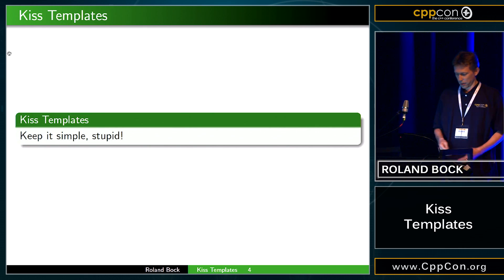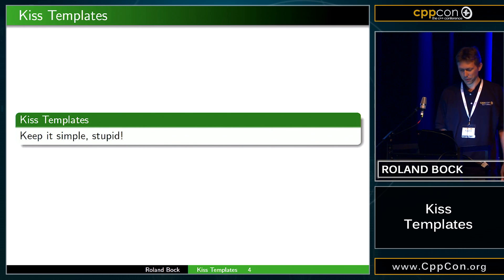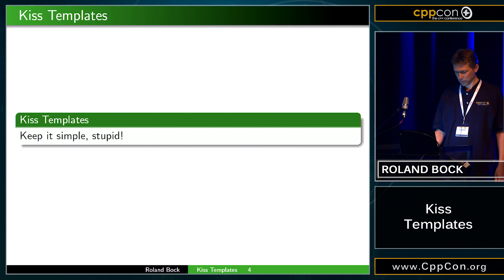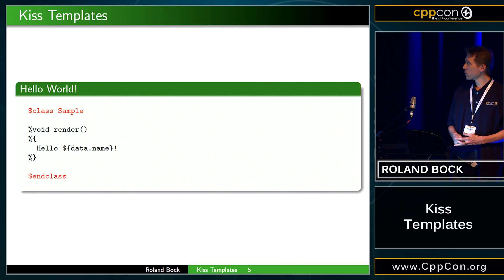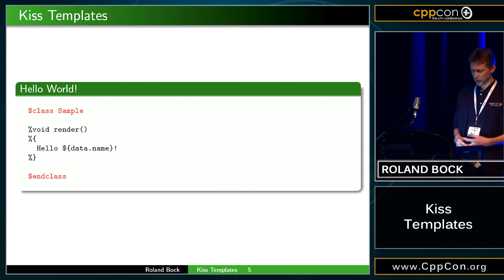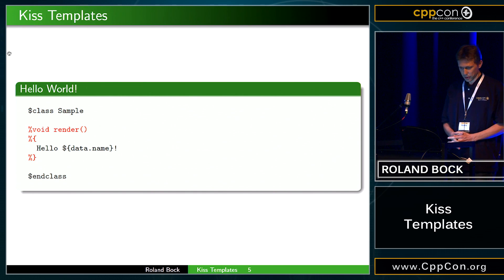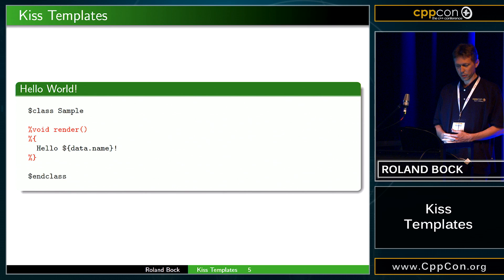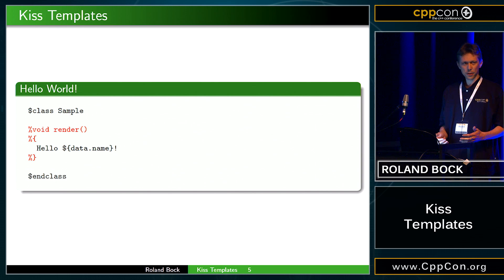For this, I invented KISS templates. As Kate guessed, it's short for Keep It Simple, Stupid. And this is what it looks like. The red thing is a marker for the template — a template called "sample" in this case. Inside the template, you can have C++ code. Functions are the most useful thing. Anything that starts with a percent is C++ code.